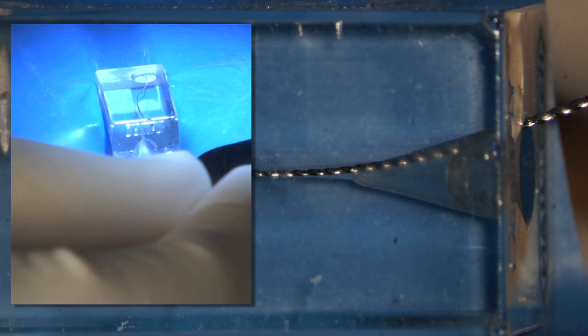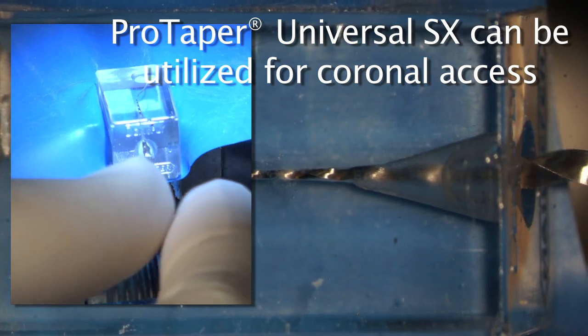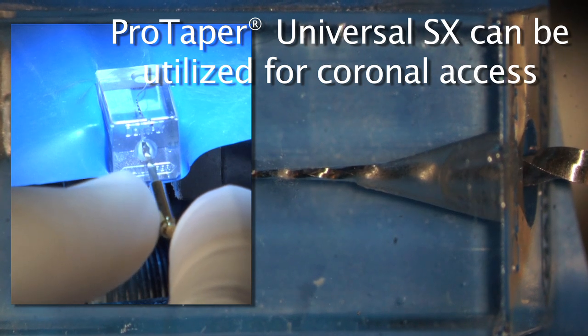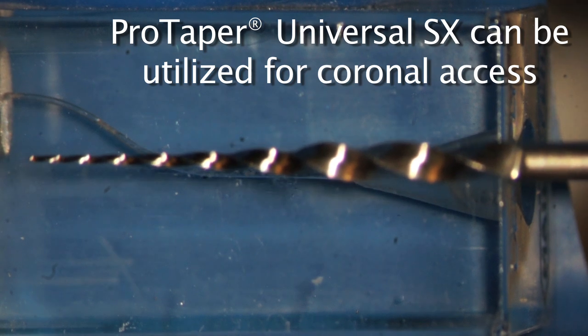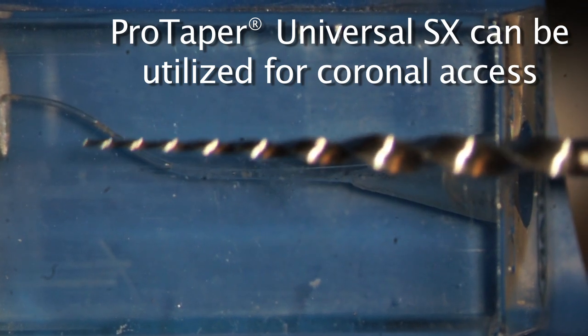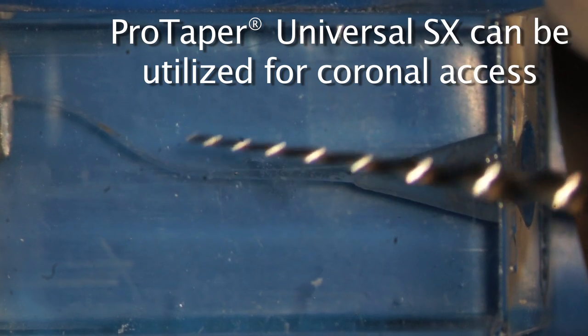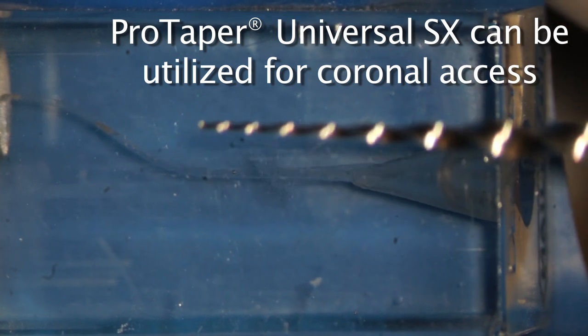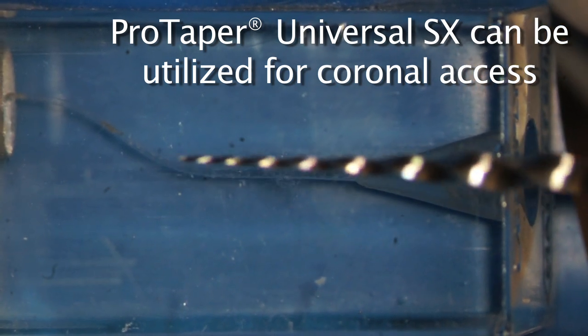The SX is a great instrument to rapidly pre-flare the orifice. It can remove triangles of dentin, and also it can relocate the coronal aspect of canals away from external root concavities. The SX has the biggest taper in the business, it's 19%, and right in the middle of this instrument is a GG1234. So we can use this in a brushing motion. I really want to emphasize brushing, so that it doesn't grab. If your SX is grabbing, you're pecking, and you're not brushing.